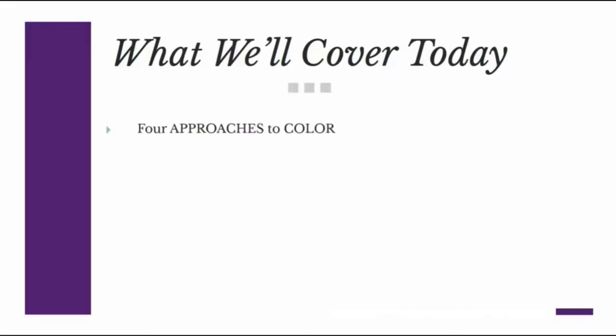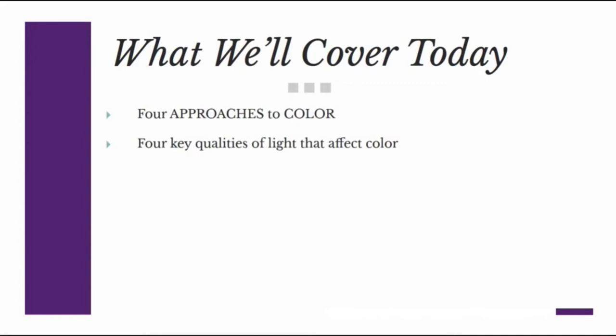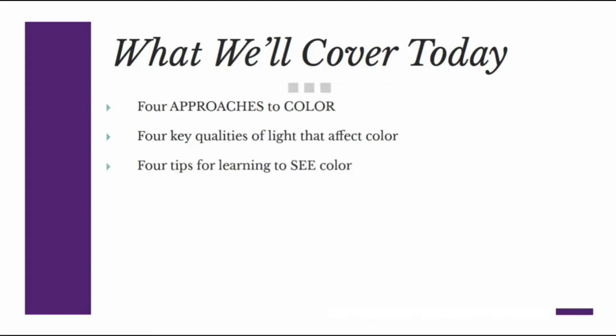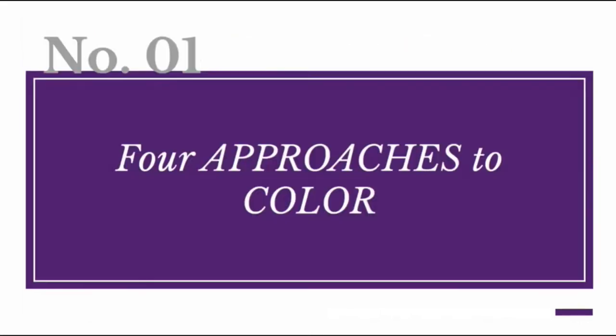What we're going to cover are four approaches to color — four different color systems that artists use to deal with color in painting — four key qualities of light that affect color, the four different aspects of light that affect the way we perceive color as we look at objects, and four tips for learning to see color — ways to put that into action. So let's jump right into those four approaches to color.